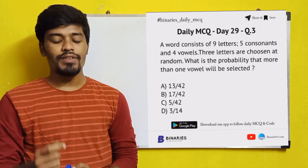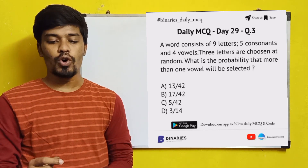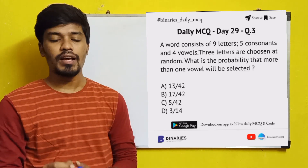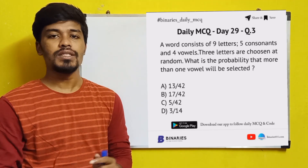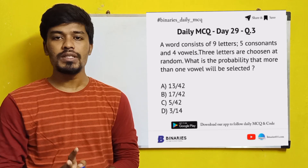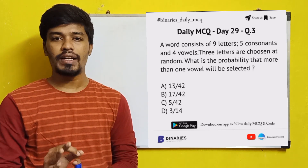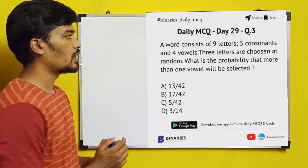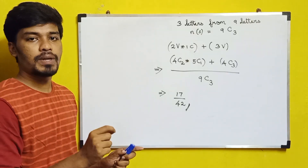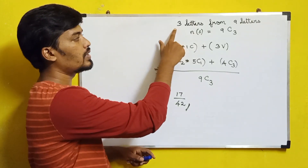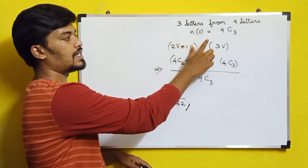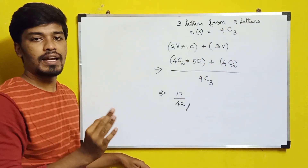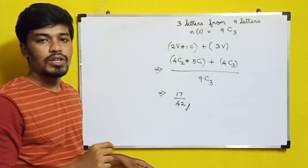The last question: a word consists of 9 letters — 5 consonants and 4 vowels. Three letters are chosen at random. What is the probability that more than one vowel will be selected? So out of 9 letters (5 consonants, 4 vowels), when 3 letters are selected, we want more than one vowel. The sample space is 9C3 — selecting 3 letters from 9.